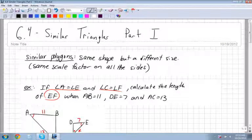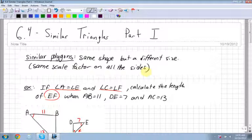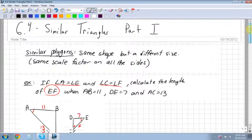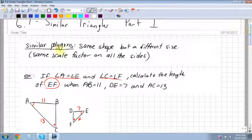Alright, chapter 6.4 is similar triangles, and this is split up into two parts. Similar polygons have the same shape but different size. Remember we've talked about this all through the chapter. They have the same scale factor on all the sides. Just be clear that the same scale factor is for similar polygons.